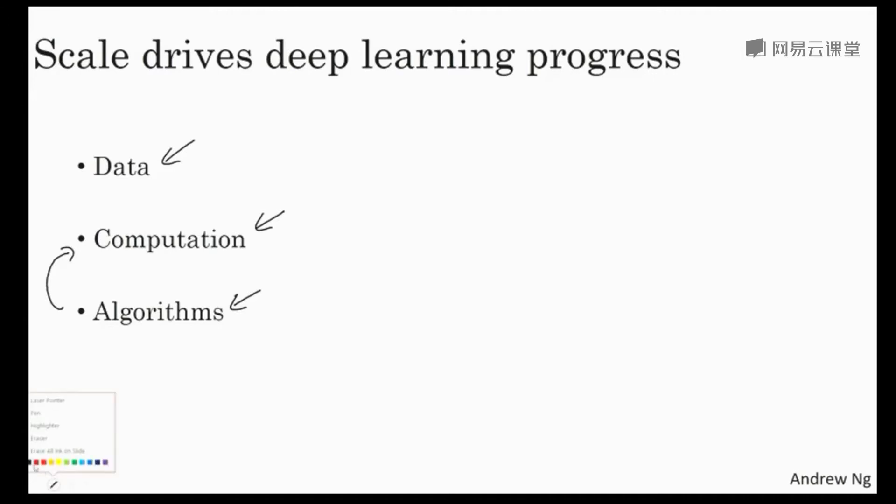So as a concrete example, one of the huge breakthroughs in neural networks has been switching from a sigmoid function, which looks like this, to a ReLU function, which we talked about briefly in an earlier video that looks like this. If you don't understand the details of what I'm about to say, don't worry about it.